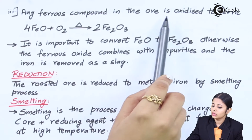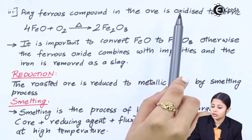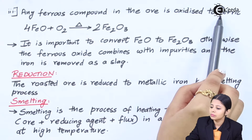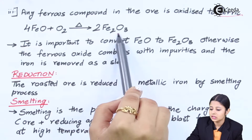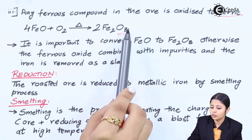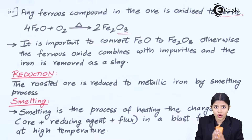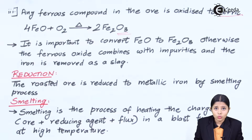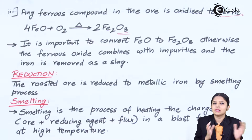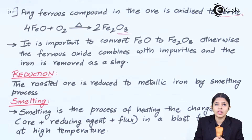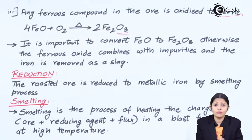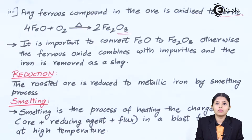The third effect of roasting is that any ferrous compound in the ore is oxidized to ferric compound. It is very important to convert ferrous into ferric. If we do not convert ferrous into ferric, the ferrous compound itself will go away in the form of slag. We do not want the core metal — the metal we intend to extract — to go away in slag. We need iron separated from all other impurities, and we do not want iron itself to become an impurity.